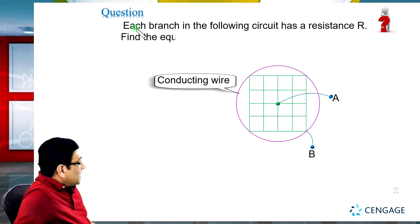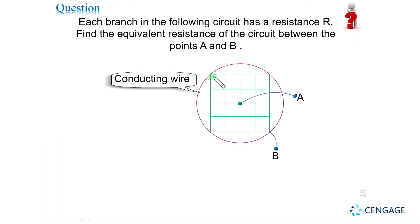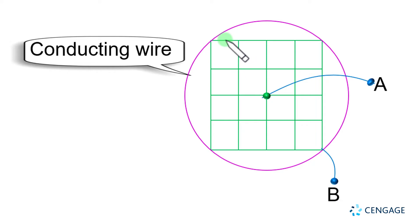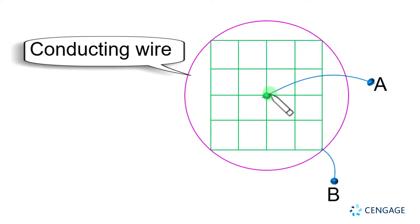In this illustration, each branch in the following circuit has a resistance R. This is an electrical network where each straight part has resistance R, and it has the geometry of a square shape network. The corners of the square are joined by a conducting wire — conducting wire means no resistance, zero resistance — that means the potential of the corners of this square should be equal. We need to find the equivalent resistance of the circuit between A and B, where A is the center of the square and B is any corner.